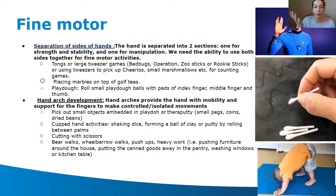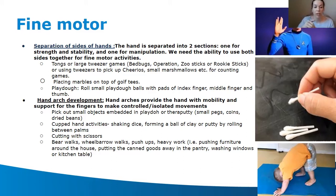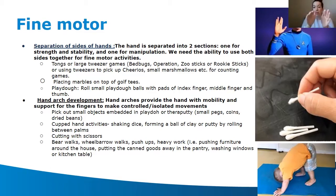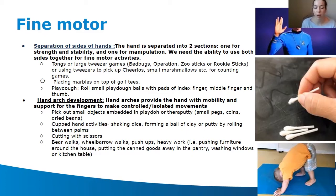Hand arch development is also important and is promoted through prone work. Tummy time and prone bear walks support hand arch. Cutting with scissors — especially through thicker material like index cards or cereal box cardboard — is exercise for the hand arch. Cupping water or scooping in a sensory bin, and picking objects out of Play-Doh or therapy putty for resistance, are also excellent activities for building those muscles.